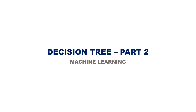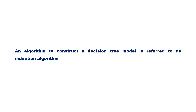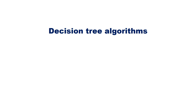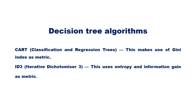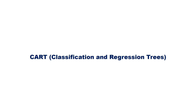In this video let us continue our discussion on decision trees. We have already seen the basic algorithm for constructing a decision tree. An algorithm to construct a decision tree model is referred to as an induction algorithm. There are basically two types of decision tree algorithms: CART, or Classification and Regression Trees, and ID3, or Iterative Dichotomizer 3. CART makes use of Gini index as metric, while ID3 uses entropy and information gain as metric. Let us see how to create a decision tree using the CART algorithm.